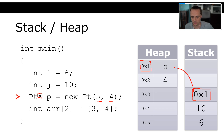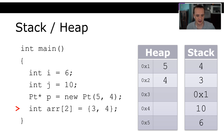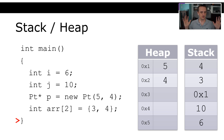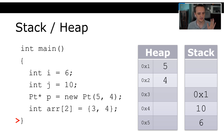We also allocate a statically-sized array using `int arr[2] = {3, 4}` — those values go onto the stack. Now when we exit the block of code: the last thing pushed on was the array, so it gets popped off. Then the pointer gets popped off, then `j`, then `i`. But here's the problem — our heap memory is still allocated. It's still living on the heap.